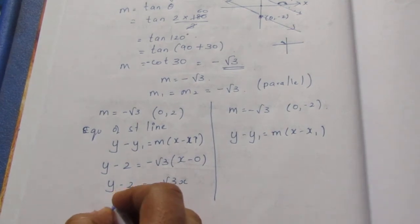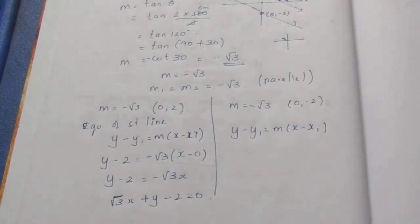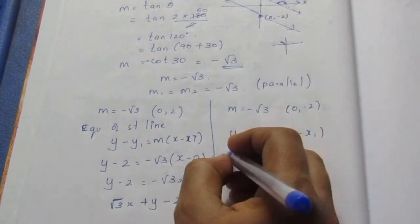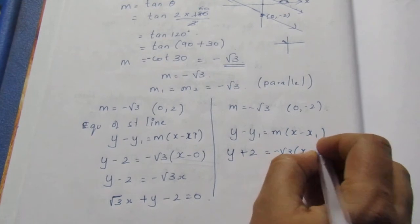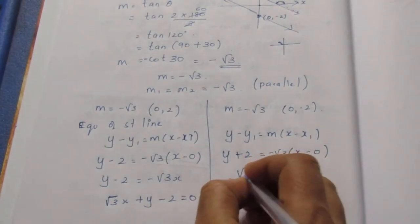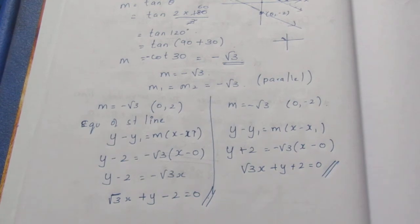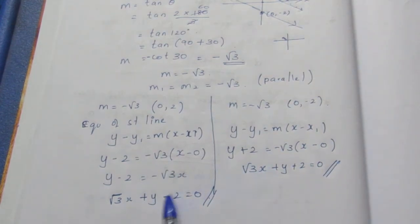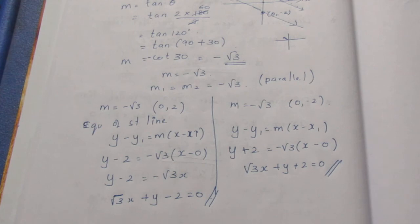For the second equation, the parallel line has slope m = −√3 and passes through (0, −2). Using y − y₁ = m(x − x₁): y − (−2) = −√3 · (x − 0), which gives √3x + y + 2 = 0. In a parallel equation, the x coefficient and y coefficient remain the same — only the constant term differs. Seeing this, we can confirm it is correct because the x and y coefficients are the same and only the constant term varies.